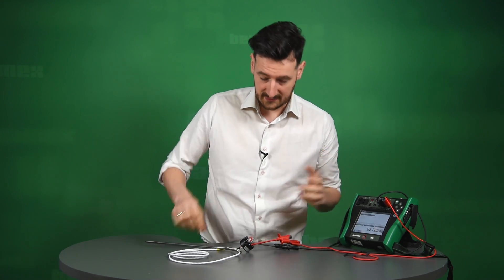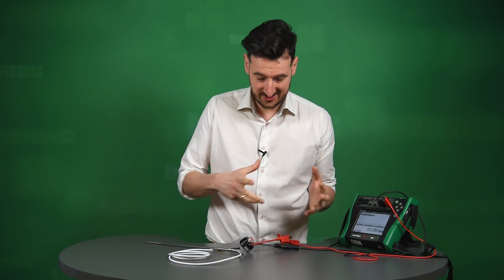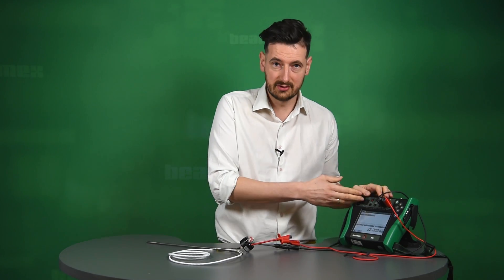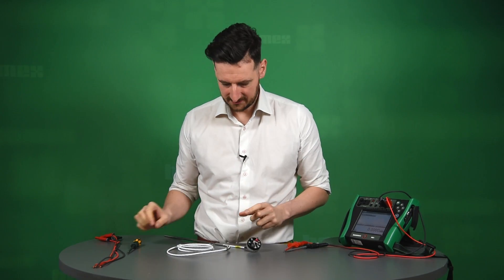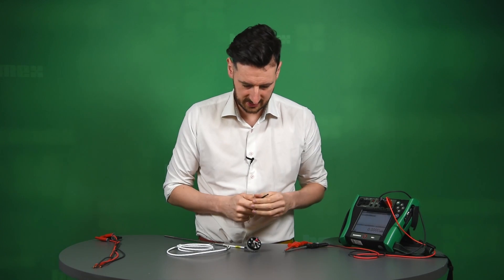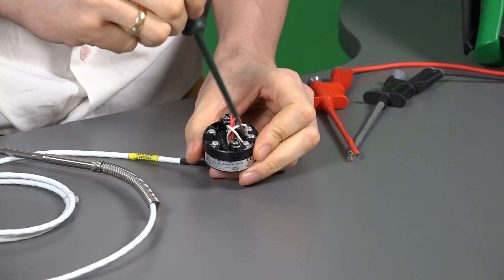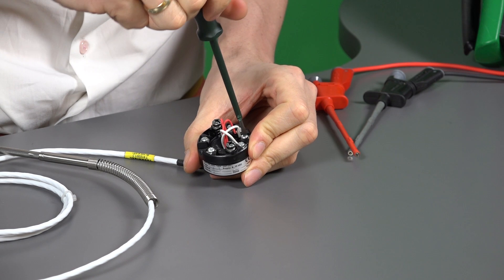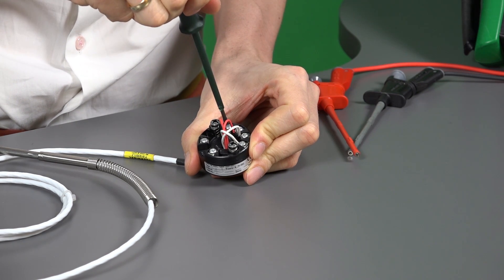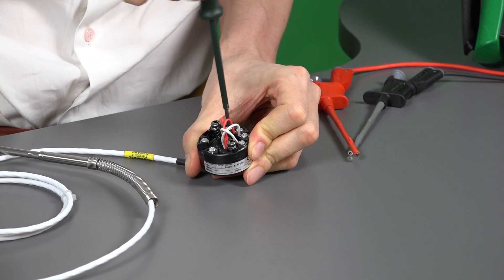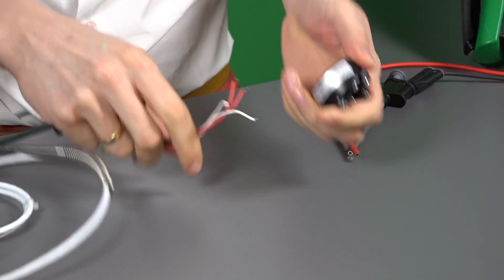So what I'm going to do now is disconnect this probe from the transmitter. We're going to disconnect everything. We're just going to connect the leads back to the calibrator. And you will see how we can actually do the calibration using the documenting calibrator and simulating the RTD. The probe is now going to be disconnected from the transmitter.